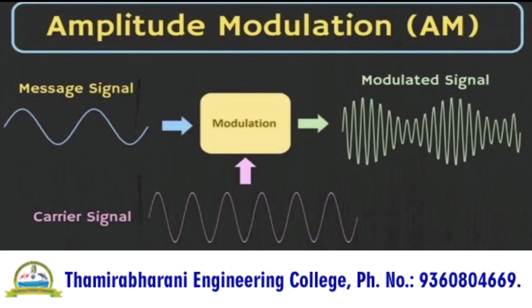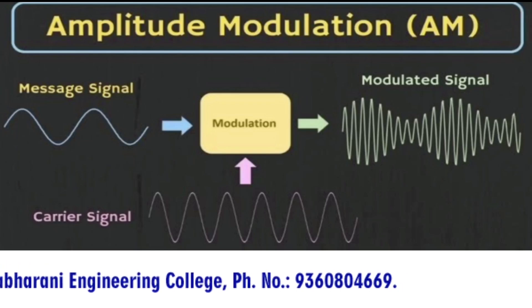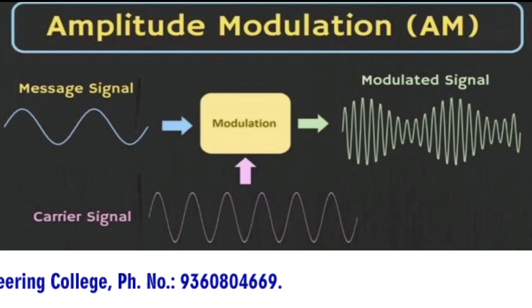The next slide shows the functional block diagram of Amplitude Modulation. Modulation is the process of varying one or more properties of a periodic waveform with a modulating signal to be transmitted. A modulator is a device that performs modulation.